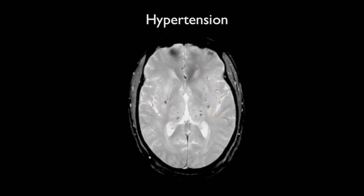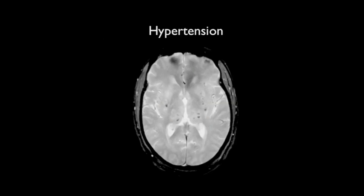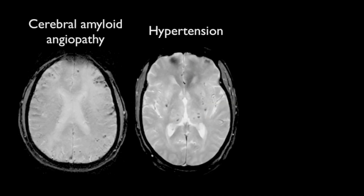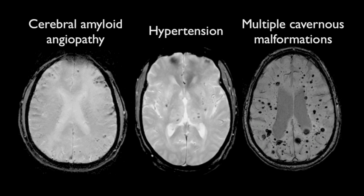These should be distinguished from the micro hemorrhages seen in cerebral amyloid angiopathy, which underlies most cases of primary lobar hemorrhage, where they are located peripherally within the brain. A differential on the MRI appearance is that of multiple cavernous malformations, seen either as an autosomal dominant inherited condition or as a result of prior cranial irradiation.